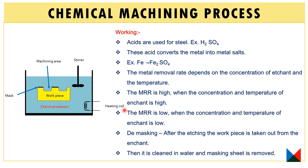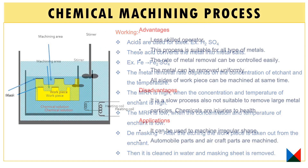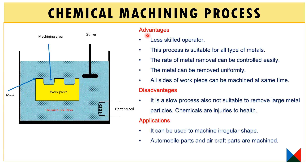After metal removal, de-masking is carried out. After the etching or erosion process, the workpiece is taken out from the etchant, cleaned using water, and then the masking sheet is removed. This completes the chemical machining process.